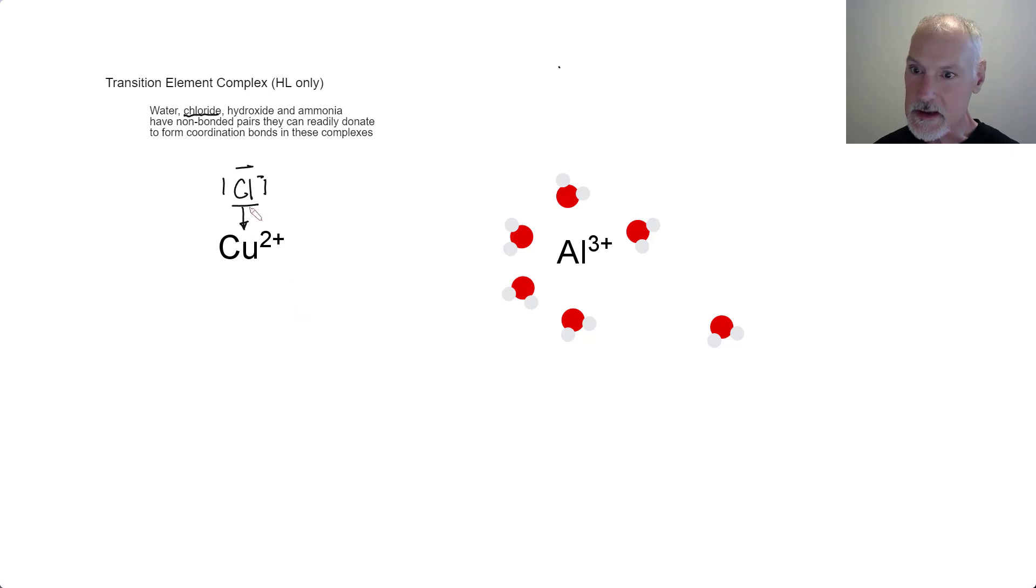There would be an attraction between the electrons in that location and the copper ion. And in fact, four chlorine ions would be able to fit around that central copper.